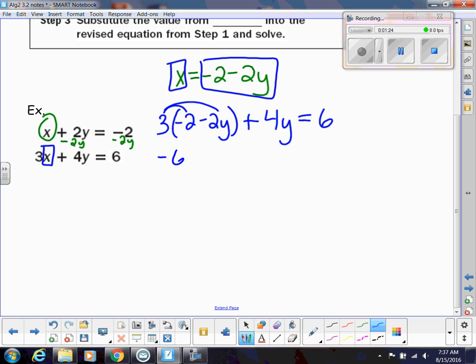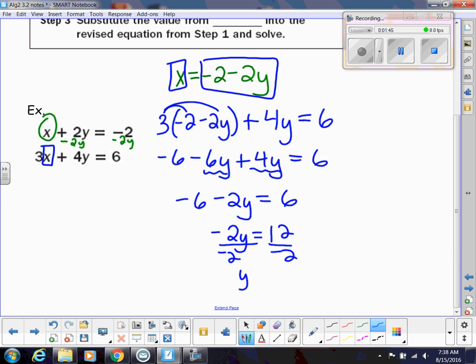So that would be negative 6 minus 6y plus 4y equals 6. I'll combine my like terms. So I have negative 6 minus 2y equals 6. Add the 6 over to the other side, and that gives me 12 divided by negative 2, and that gives me y equals negative 6.